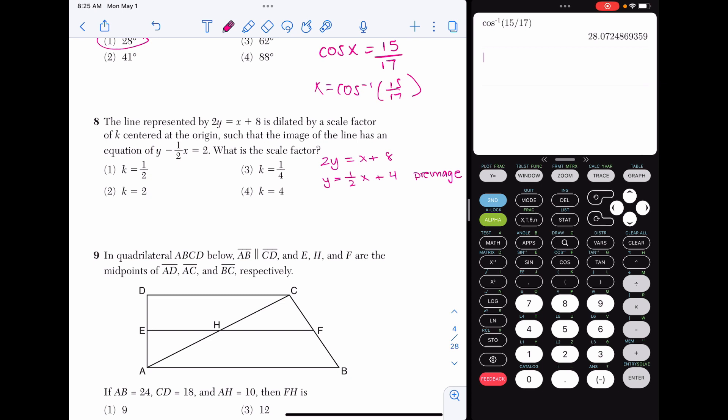For the image, we are given Y minus one half X equals 2. Get Y by itself, and I get Y equals one half X plus 2. That's the equation of my image. To figure out the scale factor, try and see what was the Y intercept multiplied by. In this case, it was multiplied by one half, so choice 1.